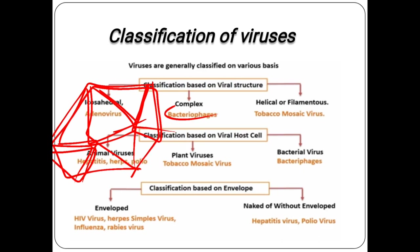Animal viruses are parasites on animals and cause disease in them. They contain either RNA or DNA as genetic material. Diseases caused include poliovirus, herpesvirus, hepatitis, and coronavirus. Plant viruses are parasites on plants such as potato, sugarcane, and tobacco, and have only RNA as genetic material. An example is tobacco mosaic virus.